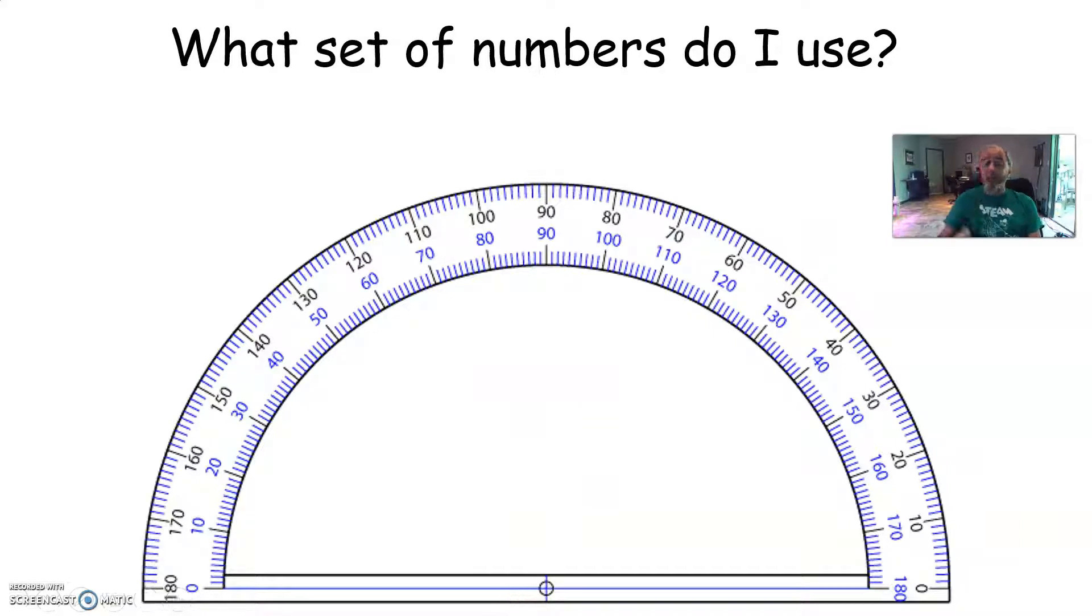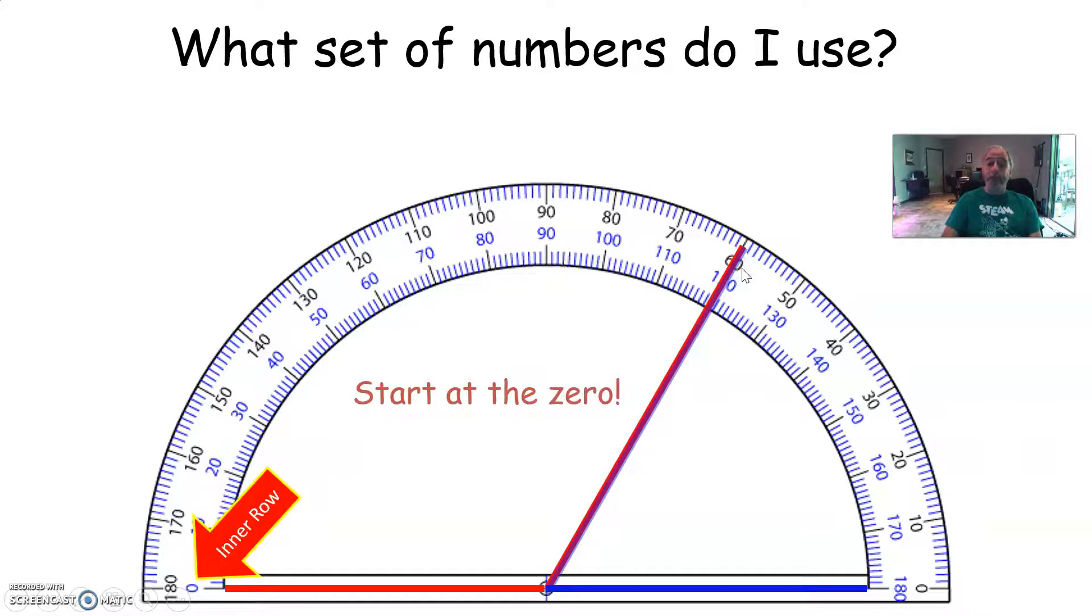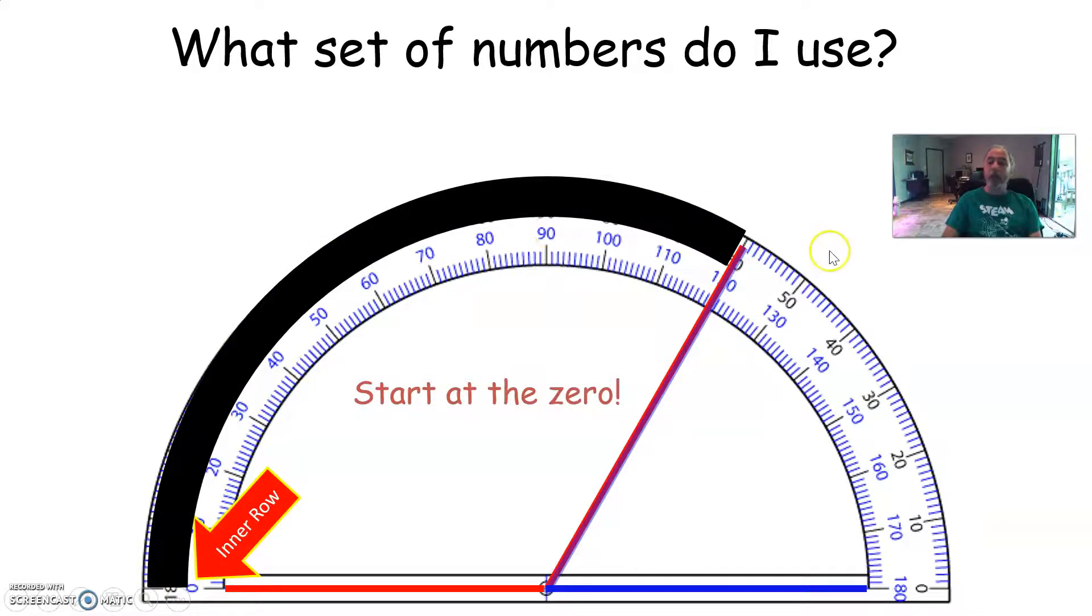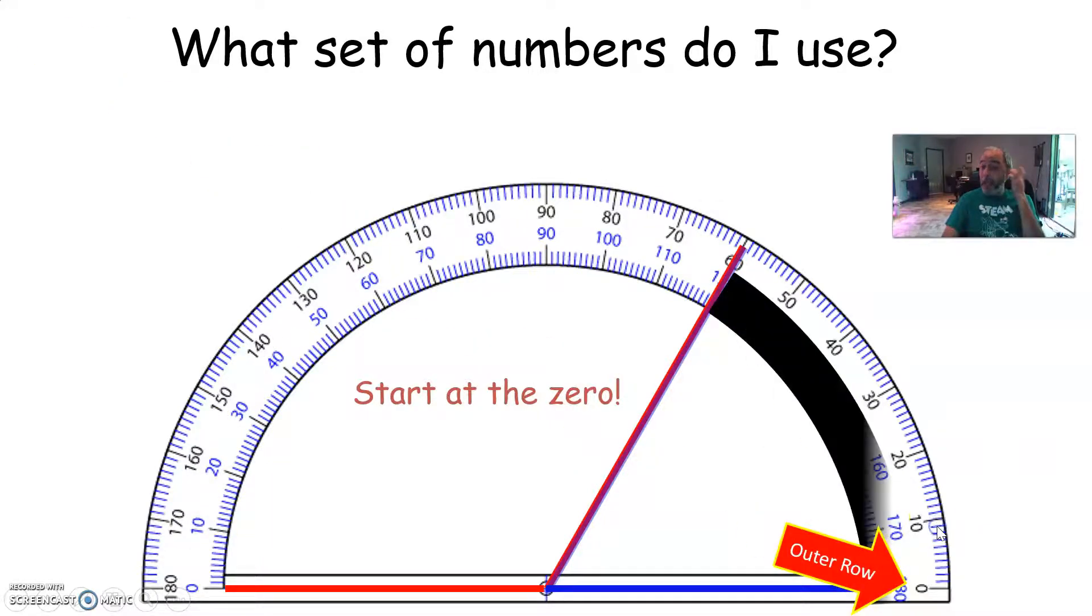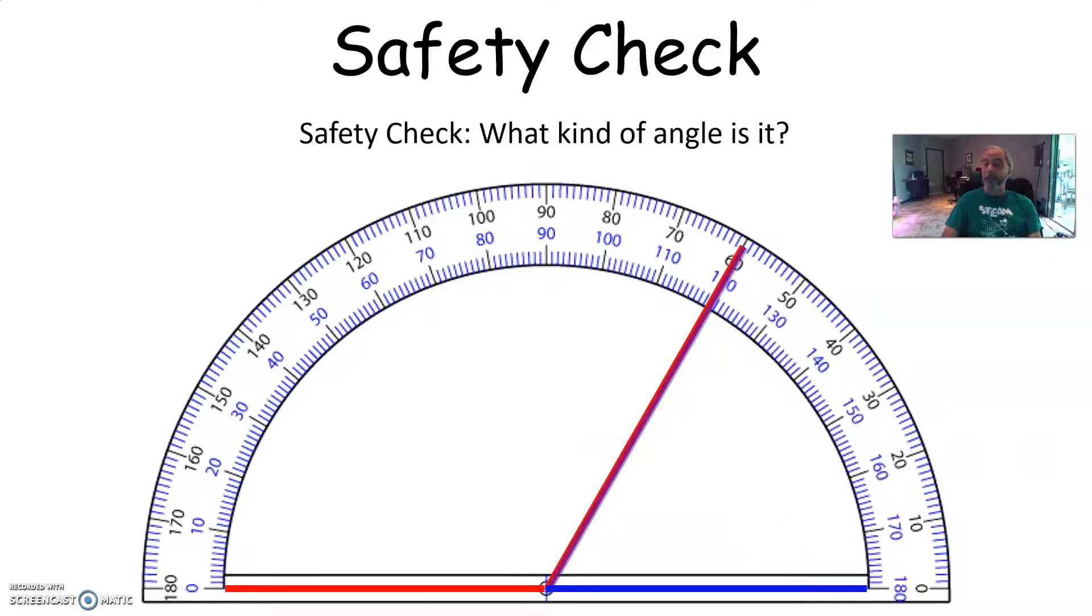Which set of numbers do I use? Well, look at your angle. So for this angle, this angle is starting at zero on the blue numbers or the bottom numbers. So I am going to measure it using the blue numbers. This angle, the blue angle, starts on this side. So I'm going to use the zero on the top band or the black numbers. And I'm going to measure it that way.